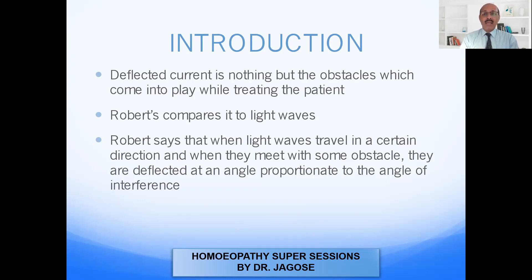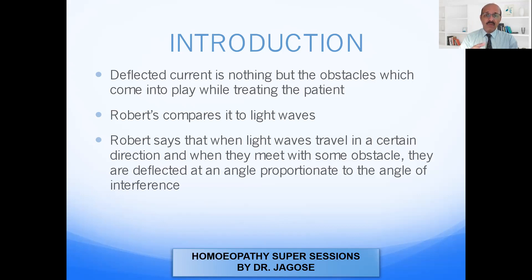Robert compares this to the light waves. He says that when light waves travel in a certain direction and when they meet with some obstacle, they are deflected at an angle proportionate to the angle of interference. When light waves travel in a straight line and some obstacle is there, they get deflected. The angle of interference means that when two waves meet, the resultant wave is either of increased, decreased, or the same amplitude.